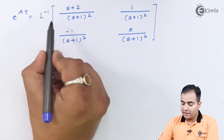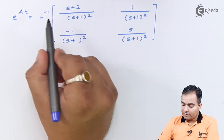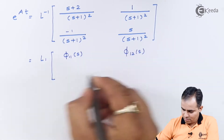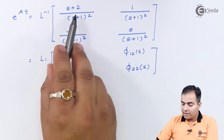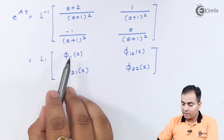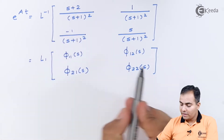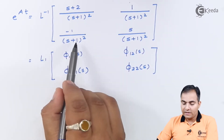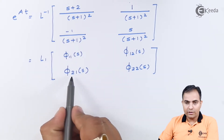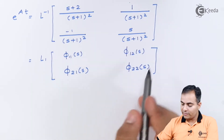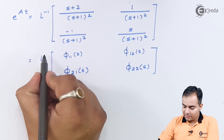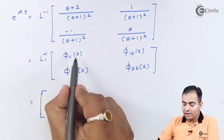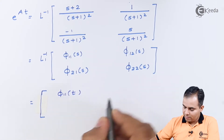We substitute (sI - A)⁻¹ and now take the Laplace inverse. We label each matrix element by position: φ₁₁(s) for row 1, column 1; φ₁₂(s) for row 1, column 2; φ₂₁(s) for row 2, column 1; φ₂₂(s) for row 2, column 2. Applying the Laplace inverse on the whole matrix gives φ₁₁(t), φ₁₂(t), φ₂₁(t), and φ₂₂(t) respectively.